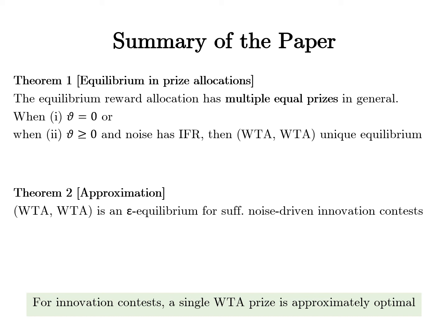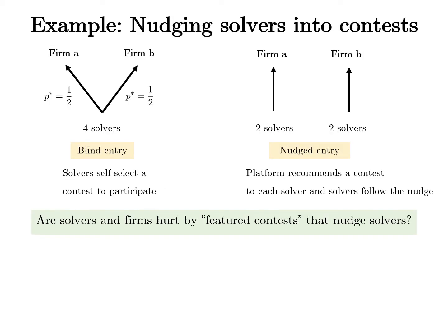Characterizing the equilibrium prize allocation is our first contribution. Second, we examine the platform's role in improving crowdsourcing efficiency. We return to our previous example focusing on winner-takes-all allocations and consider two systems. Under blind entry, solvers freely self-select which contest they wish to participate in. Under nudge entry, the platform recommends a contest to each solver, and solvers follow the platform's nudge.